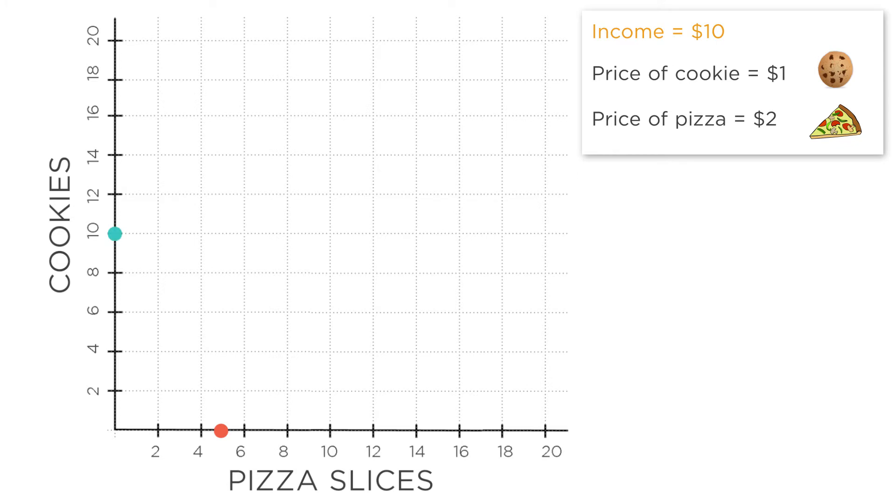Of course, you can mix and match too. You can get one slice of pizza for $2, and then have $8 left over to buy eight cookies. That puts you at this point here, eight cookies and one slice of pizza.